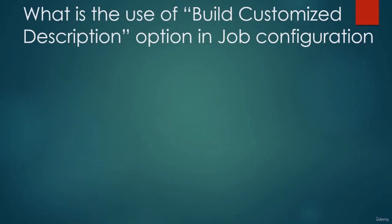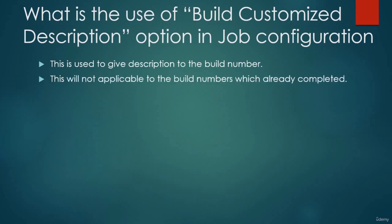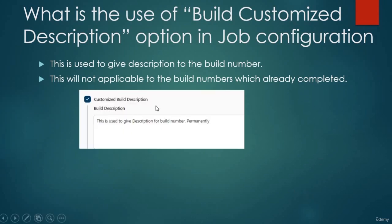Now let's see the 'Build Customized Description' option in job configuration. This gives description to the build number. We saw Jenkins-level and project-level description; now we can give description to the build number using 'Customized Build Description'. Important: this is not applicable to builds already completed — it applies from the build where you add the option onwards.